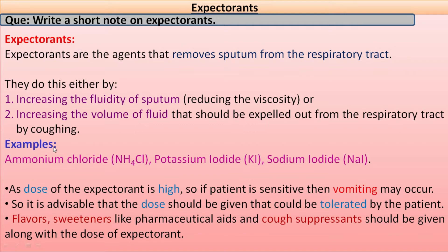Some examples of expectorants are ammonium chloride, potassium iodide, and sodium iodide — these are chemical agents. Some bitter drugs also act as expectorants. Since the dose of an expectorant is high, if the patient is sensitive, vomiting may occur. It is advisable that the dose be given in a manner well tolerated by the patient. Along with the expectorant dose, pharmaceutical aids like flavors, sweeteners, and cough suppressants should also be given.